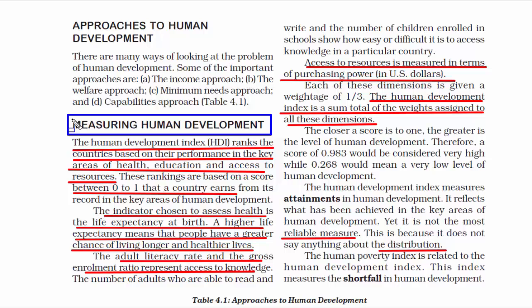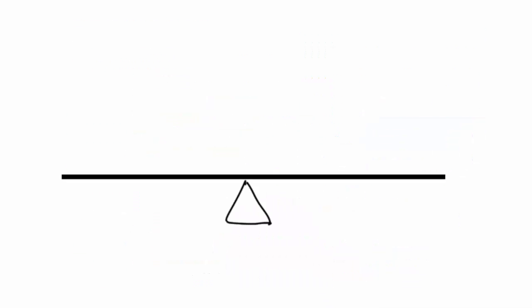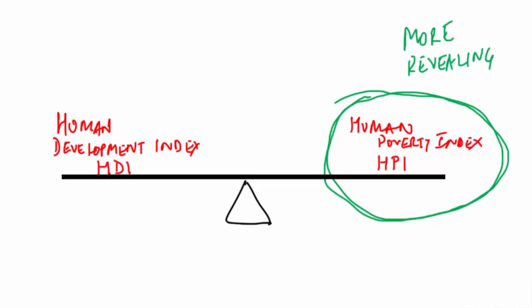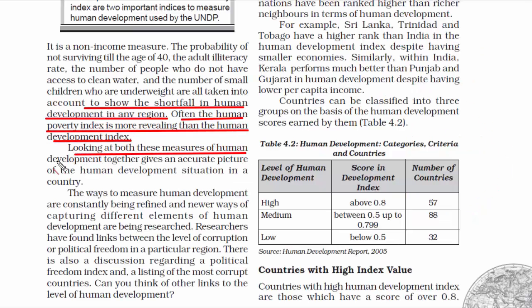To deal with this situation, there is another method called the Human Poverty Index, which measures the shortfall in human development. While the HDI and human poverty index are opposites, they are both valuable findings, because often the human poverty index is more revealing than the HDI. Looking at both these measures together gives us an accurate picture of the human development situation in a country. Measurement of human development is constantly being refined and new ways of capturing different elements are being researched.